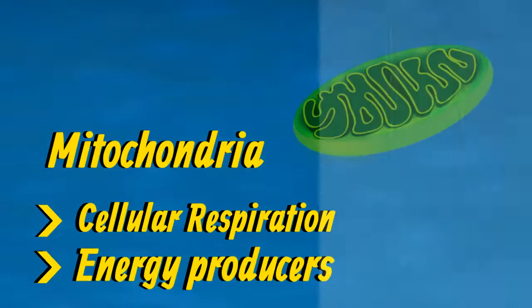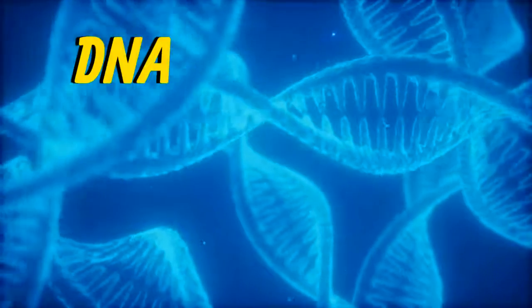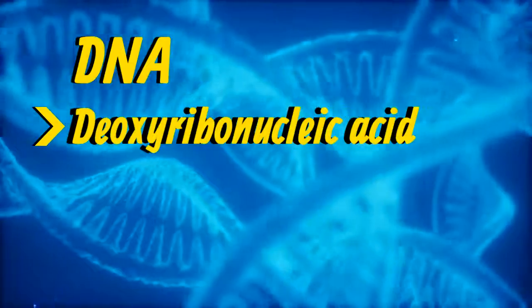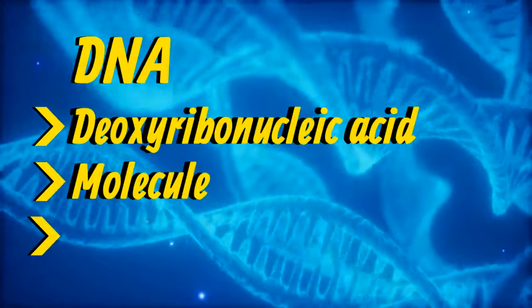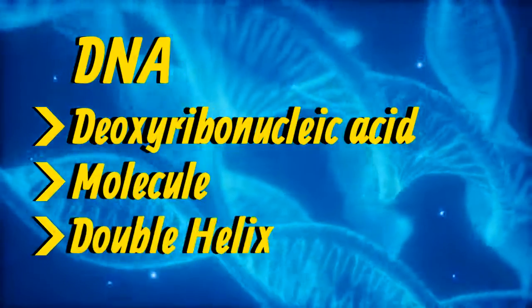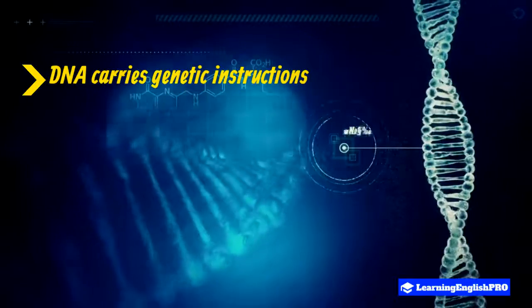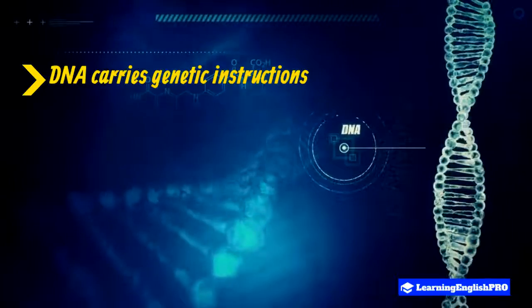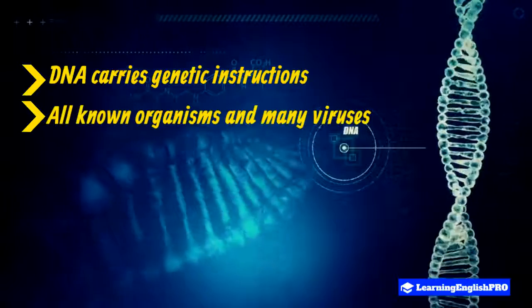The next part of the cell is DNA, also known as deoxyribonucleic acid. DNA is a molecule which takes the shape of a double helix. DNA carries genetic instructions and can be found in all known organisms and many viruses.